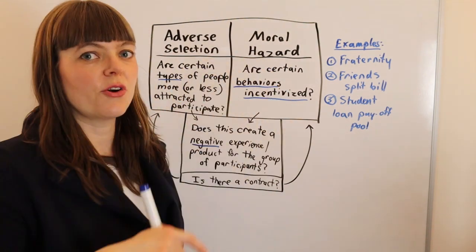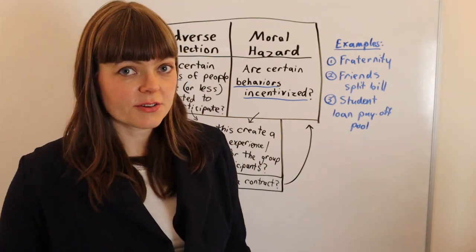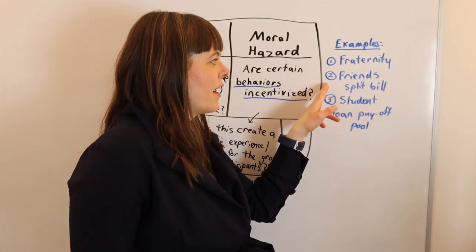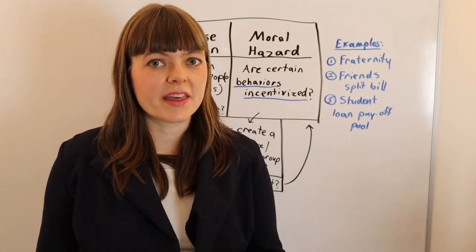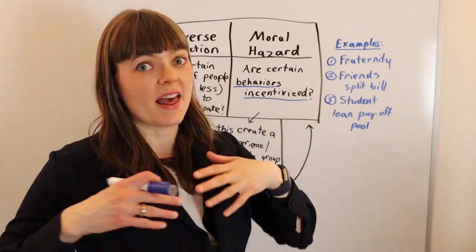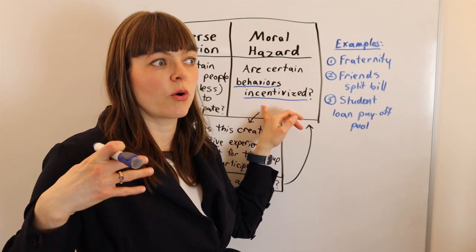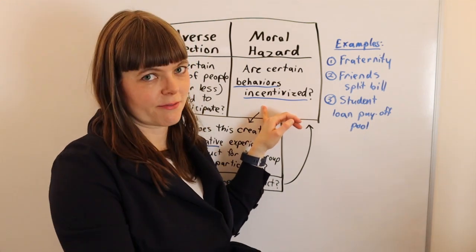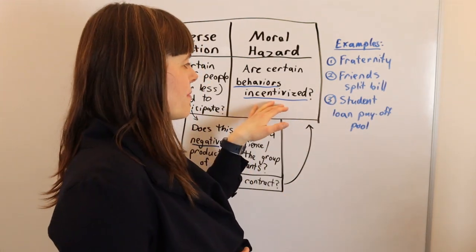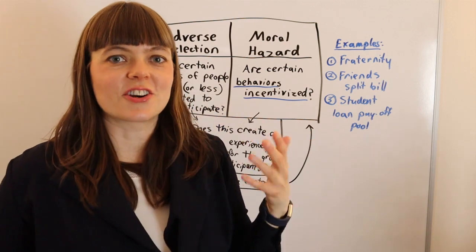These two things oftentimes go together — they're taught together, usually when they show up in economics textbooks, and there is a reason for that: they often appear together. I gave an example in another video of friends who split the bill when they go out to dinner. I said this was an example of moral hazard because when you decide at the beginning of dinner to split the bill equally, that incentivizes certain behaviors — people will order fancier drinks, more expensive meals, more desserts than they would if they were paying exactly for what they bought. So it does create behavior incentives. In that video I said that's more moral hazard and there's not adverse selection at play.